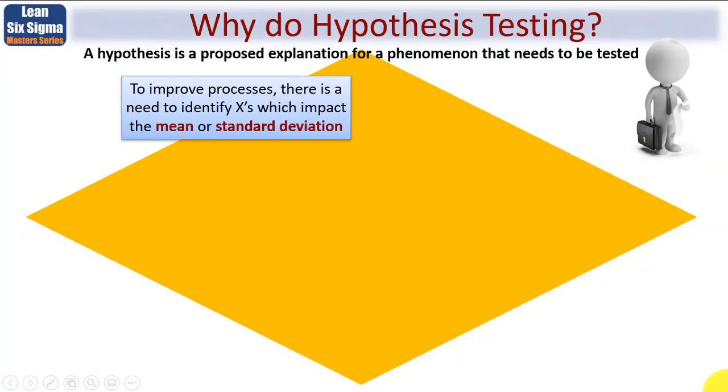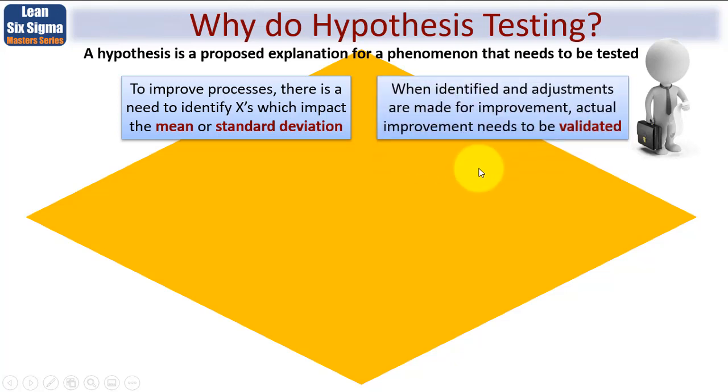First and most obviously, why would you want to do hypothesis testing? Let's start with the definition of the word hypothesis. It is a proposed explanation for a phenomenon that needs to be tested. So a hypothesis is merely a proposition. Its main purpose within Lean Six Sigma is that in order to improve processes, there is a need to identify the X's, which impact the mean or standard deviation of a population of data. When identified and adjustments are made for improvement, actual improvement needs to be validated. This is one thing tweaking your process, but has it really made any difference?